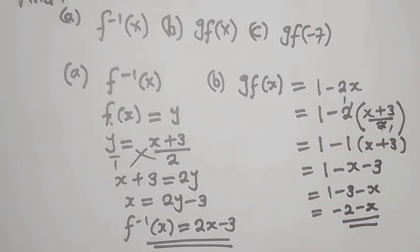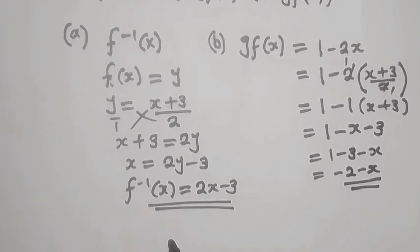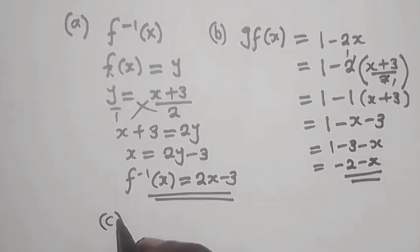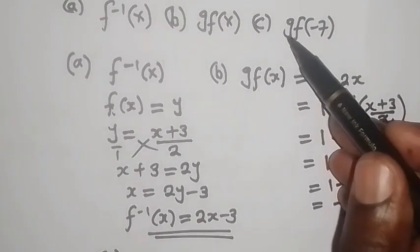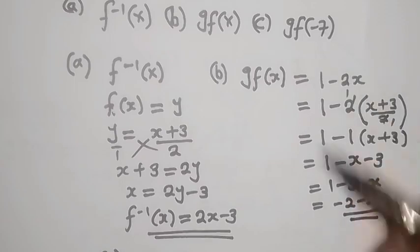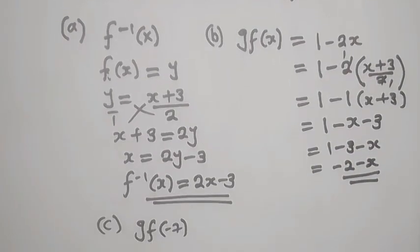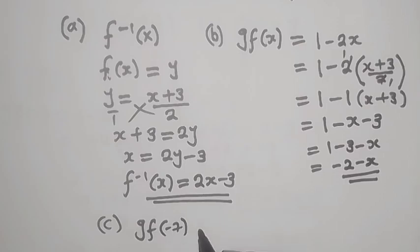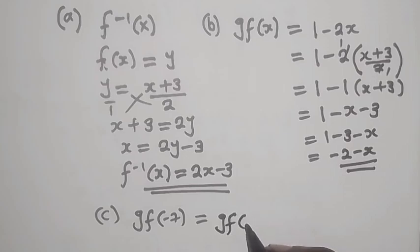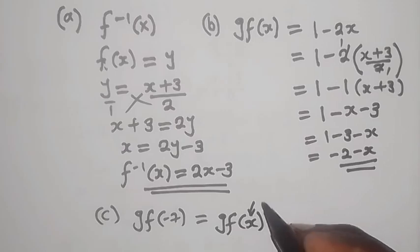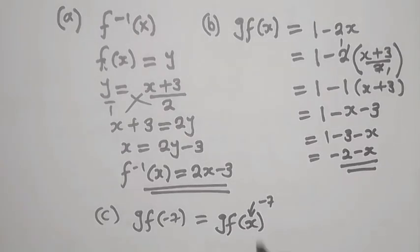You're going to find now c. So for c, they are saying g composite f of negative 7. So what this means is that g composite f of negative 7. Now remember, here we have, it's more like, we are saying that g composite f of negative 7, or let's just say x. This is this now. So now the actual number there is negative 7, which is for x.